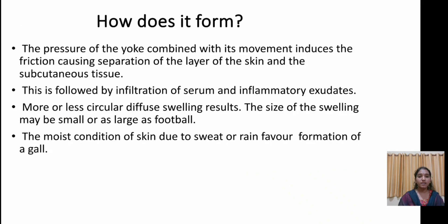How does Yoke Gal form? The pressure of the yoke combined with its movement induces friction, causing separation of the layers of skin and subcutaneous tissue. This is followed by infiltration of serum and inflammatory exudates, resulting in a more or less circular, diffuse swelling. The size of the swelling may be small or as large as a football. Moist conditions of the skin due to sweat or rain favour the formation of the gal.